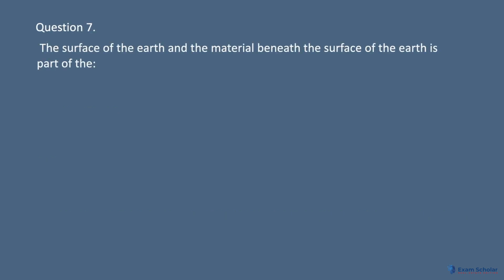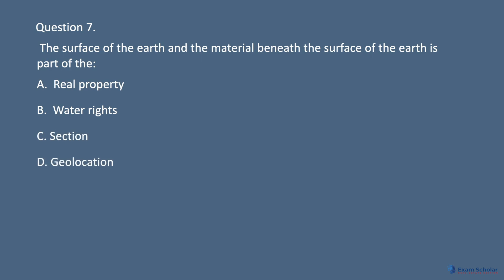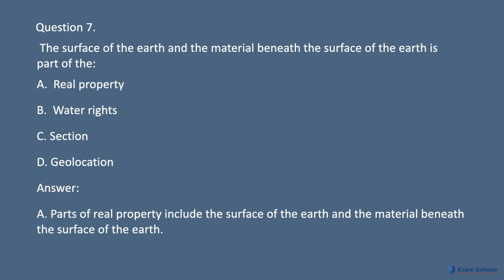Question 7. The surface of the earth and the material beneath the surface of the earth is part of the: A. Real property. B. Water rights. C. Section. D. Geolocation. Answer: A. Parts of real property include the surface of the earth and the material beneath the surface of the earth.